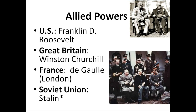The Allied powers on the other side: the United States is led by Franklin D. Roosevelt. Great Britain has King George, but Winston Churchill is the Prime Minister and therefore really the leader of the war effort. France is led by Charles de Gaulle, who — once France is taken over by the Germans — is going to flee to London and lead his French government in exile there. The Soviet Union is led by Stalin, noted with a star because Stalin switches sides and originally started the war on the side of the Axis powers.